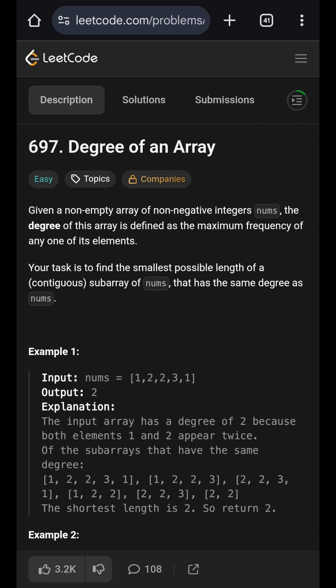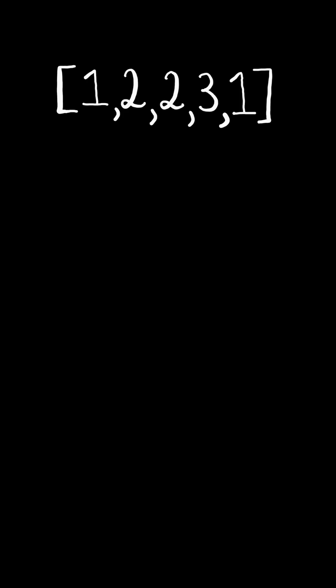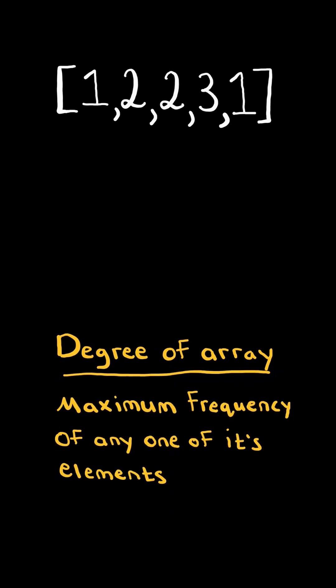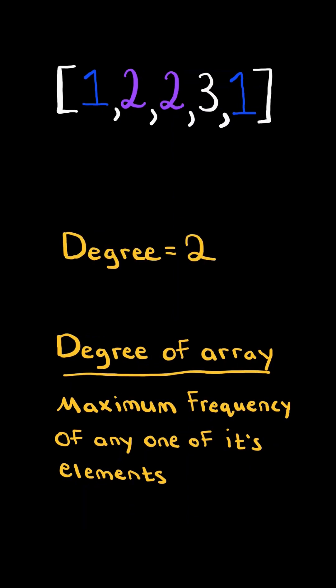Degree of an array. Given an array of positive numbers, the degree of an array is defined as the maximum frequency of any one of its elements. For example, both elements 1 and 2 appear twice with the max frequency, so the degree of the array is the maximum frequency, which is 2.